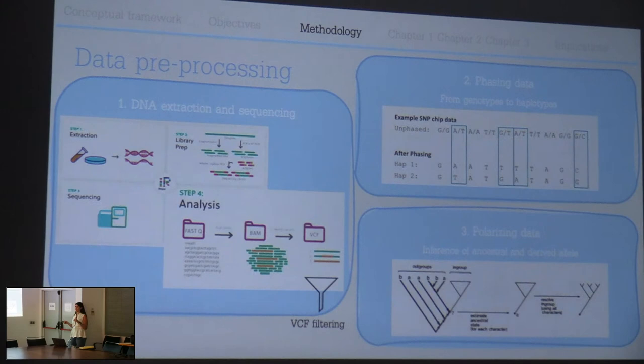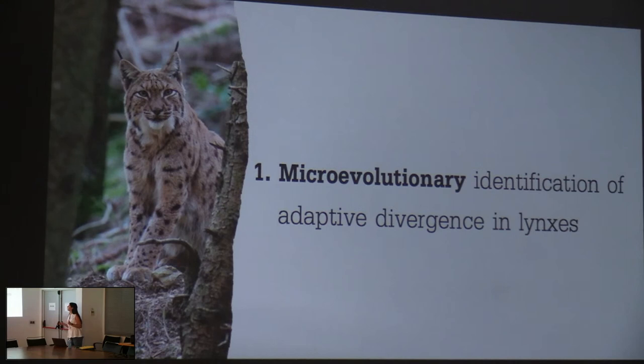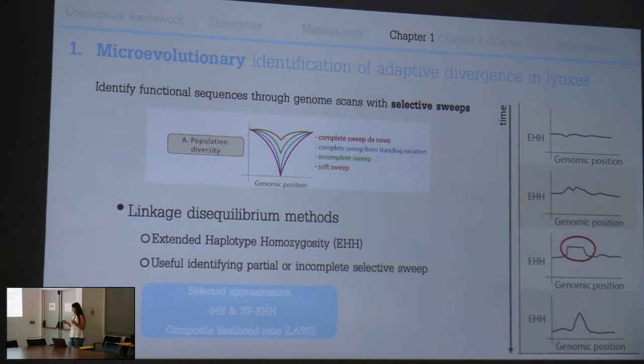Going to Chapter 1, the microevolutionary approach. In this chapter I aim to identify functional sequences through genome scans, specifically looking for selective sweeps. A selective sweep is a reduction in genetic diversity near a beneficial allele, due to linkage disequilibrium. When a positive allele appears in a population, it goes high in frequency very fast, and nearby alleles sweep up in frequency, forming a haplotype - that's the signal I want to detect.